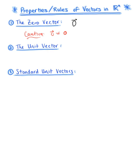Next we have the unit vector, which is again more of a statement. We say that if the magnitude of some vector u is 1, then vector u is a unit vector. We'll be using unit vectors a lot this semester. It's often easier to work with a vector that has a length of 1, so if the magnitude is 1, that vector is a unit vector.